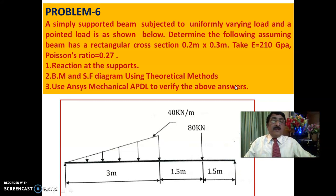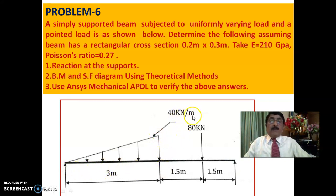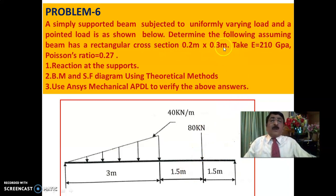The problem is this: as you see here is a simply supported beam and you have a uniformly varying load to a distance of 3 meters at 40 kilonewton per meter, and there is an 80 kilonewton point load at a distance of 4.5 meters from the left support. It has a rectangular cross section 0.2 by 0.3, Young's modulus is 210 GPa — it is steel — and Poisson's ratio is 0.27.